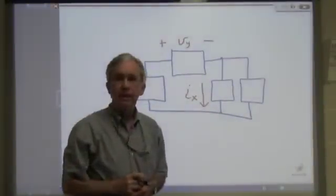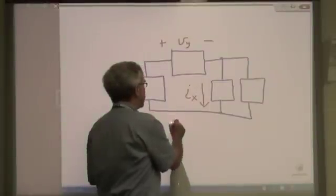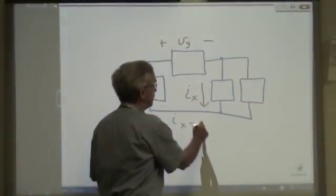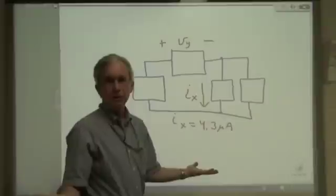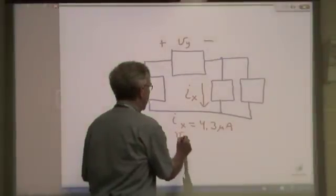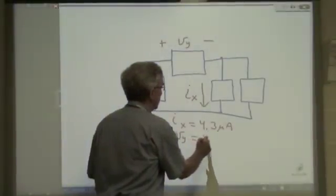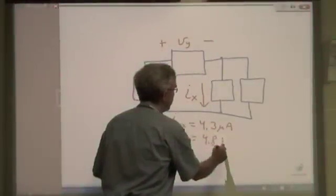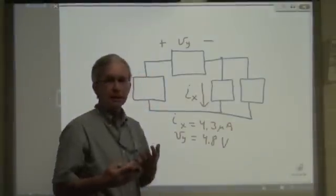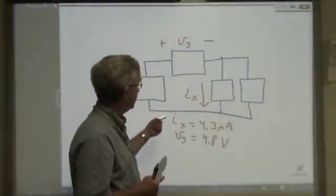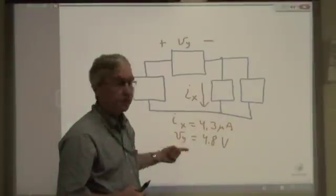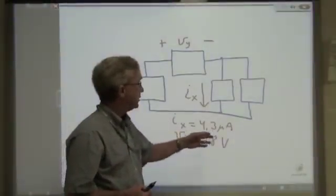So we might end up finding that I sub X is equal to 4.3 microamps. The voltage might have a value of 4.8 volts. And you can see that these variables, current and voltage, have symbols associated with them: I for current, V for voltage, and also units.